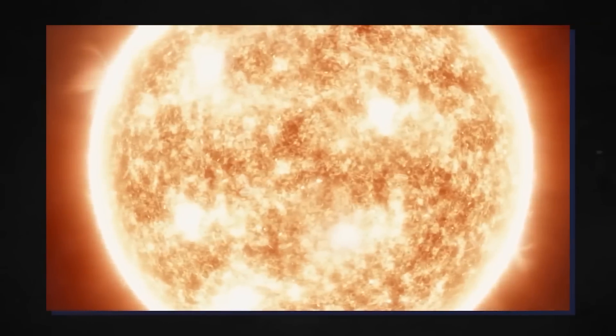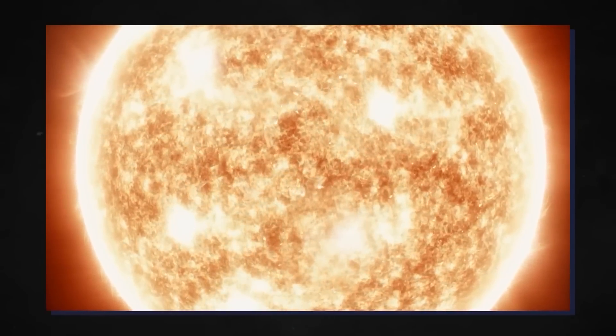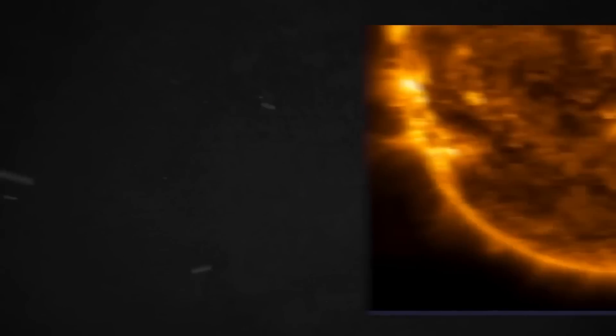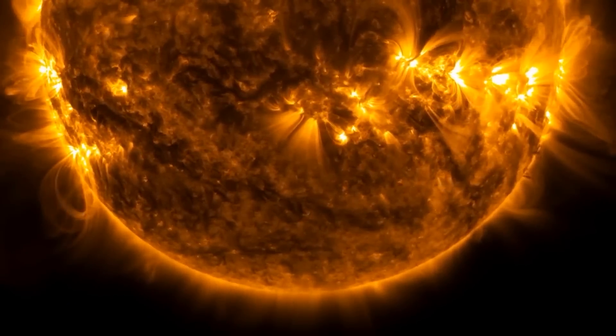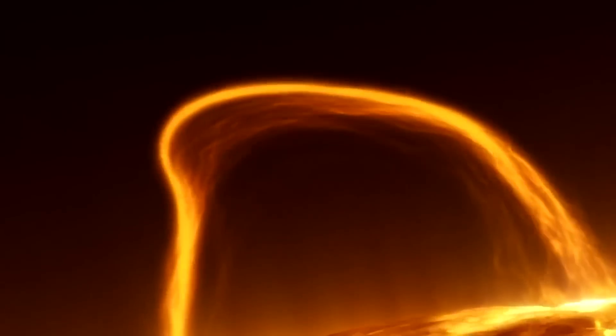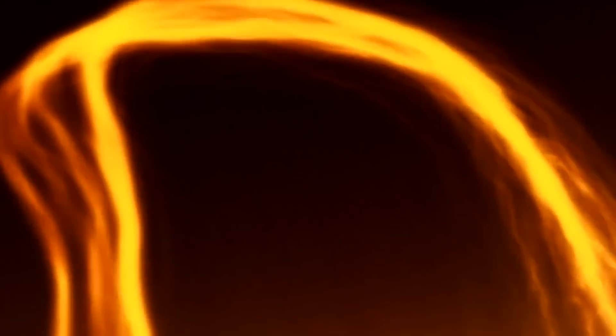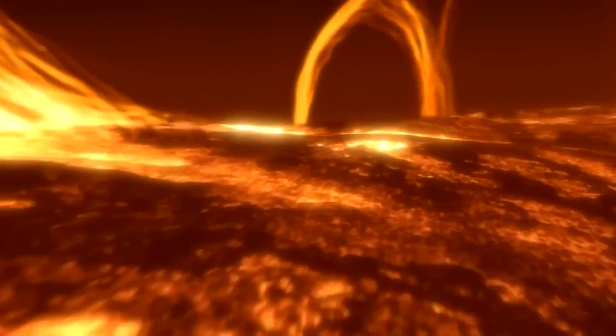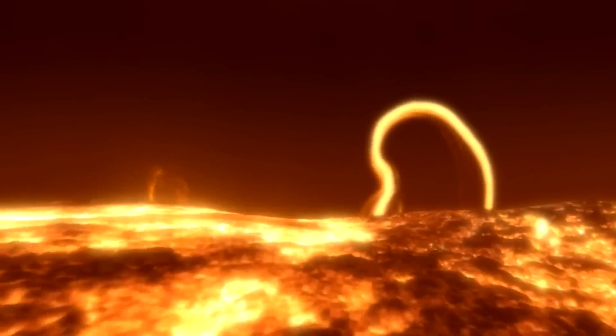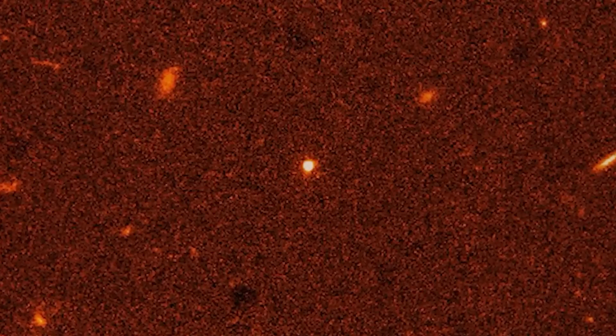Despite its vast size, Betelgeuse is only 16.5 times more massive than the Sun. Betelgeuse has 126,000 solar luminosities, making it look bright at 548 light-years away. Interestingly, Betelgeuse is cooler than the Sun, with a surface temperature of 3600 degrees Kelvin.